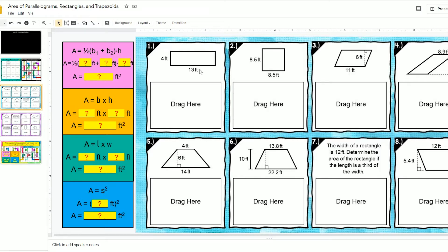I know that this figure is a rectangle, and the area of a rectangle is length times width. So I want this formula right here. I'm going to drag it over to where it says drag here.